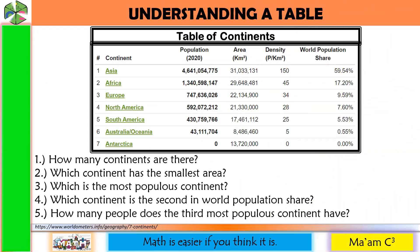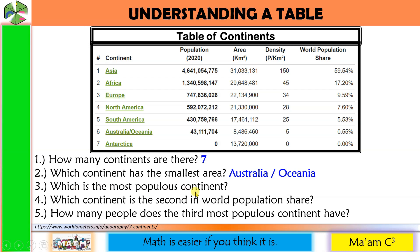Let's have an activity. Based on the table shown, let us answer the following. How many continents are there? There are seven. Which continent has the smallest area? Look for the column of area and find the smallest — that would be Australia or Oceania. Which is the most populous continent? Look for the biggest population — that would be Asia. Which continent is the second in world population share? Look for the column of world population share — the second one is Africa.